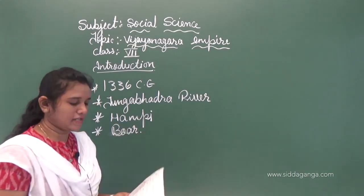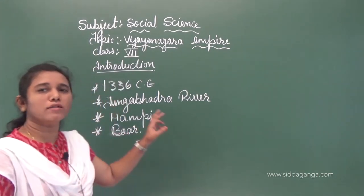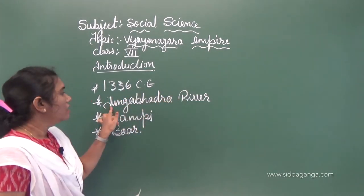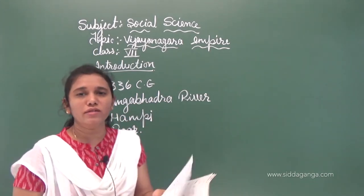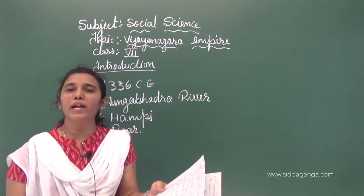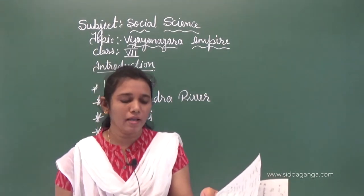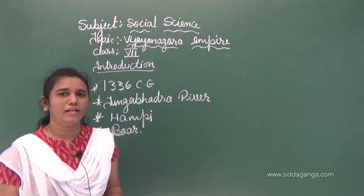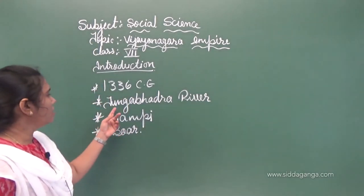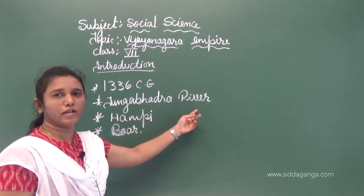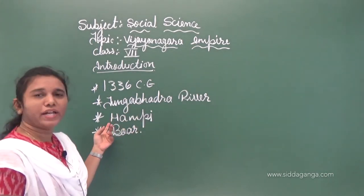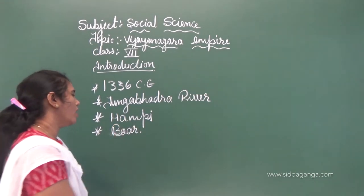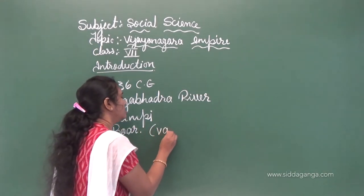Once again: the Vijayanagara Empire was founded in 1336. The founders of this dynasty were Harihara, Bukkaraya, Kampana, Marappa, and Mudappa. It is situated on the Tungabhadra River. Their capital was Hampi. Their national emblem was Varaha — in Sanskrit, Varaha means Bor.